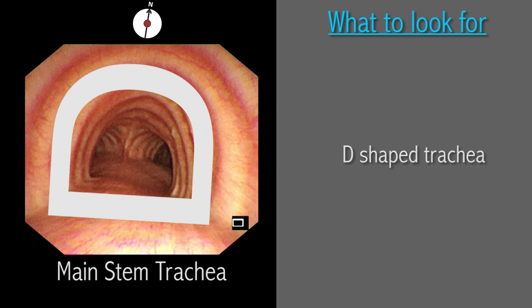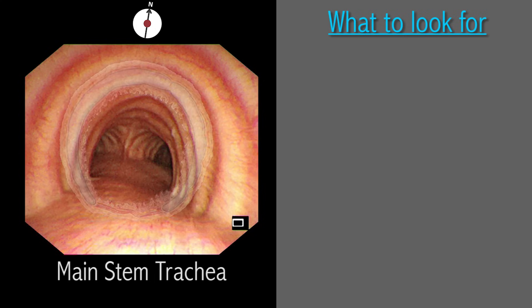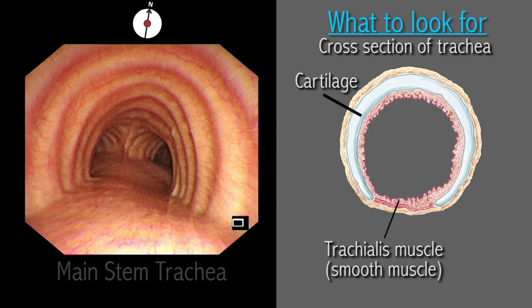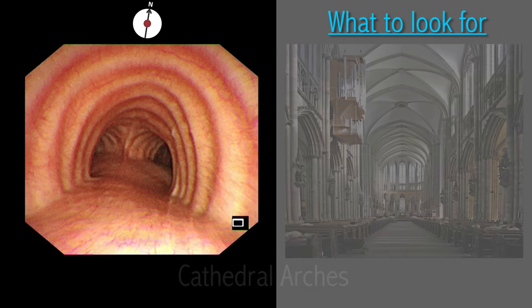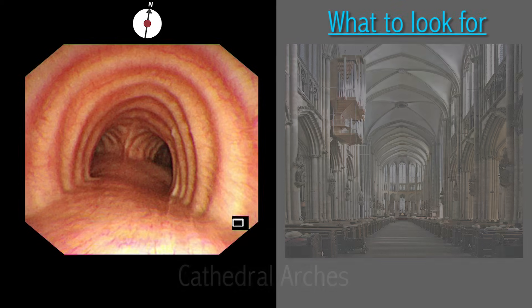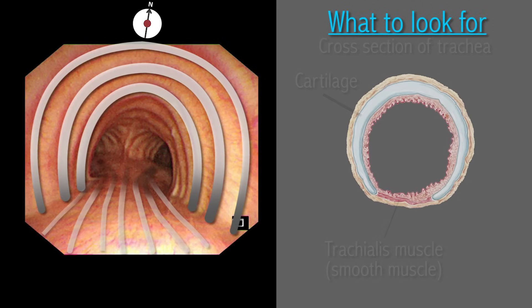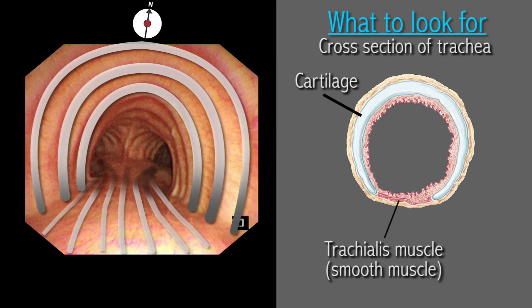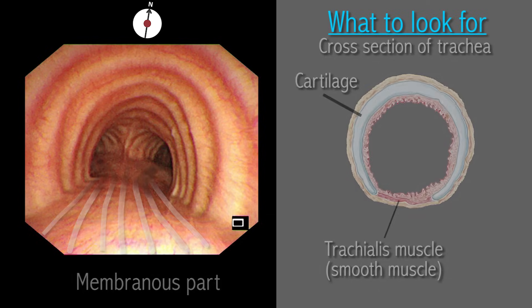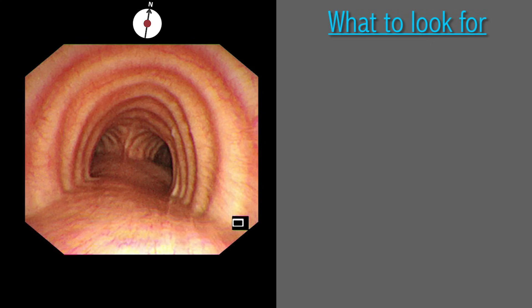The normal trachea has a D-shaped cross-section. The architecture of the scaffolding of the trachea is preserved by the C-shaped cartilages, which form what is known as the cathedral arches. The trachealis muscle forms the membranous part of the trachea and shows as longitudinal mucosal folds that make the flooring under the cathedral arches. The membranous part completes the circumference of the trachea and closes the C into a D profile.